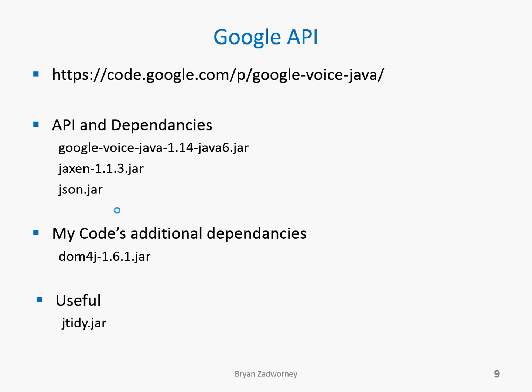The Google Voice Java API is found in google-voice-java-1.14-java6.jar. That jar requires the Jackson 1.1.3 and the json.jar files. In addition, to make my code work, I used DOM4J, which you can download from the Google Voice link at the top of the page. I also found JTidy useful — I didn't use it in my final project because I had to cut back for scope, but JTidy will clean up the HTML and XML you get out of Google Voice to make it a little easier to use.